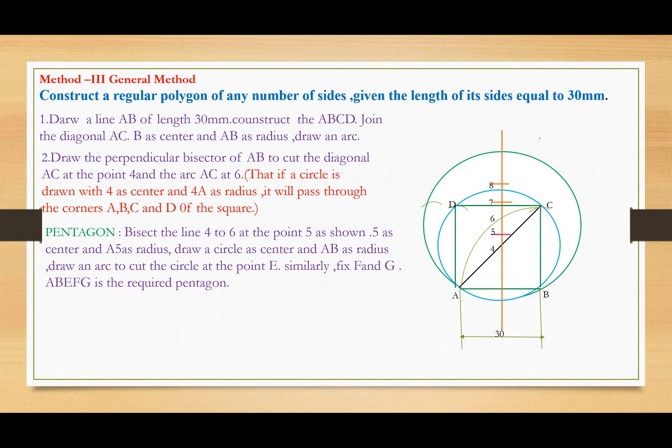Take AB distance and cut the circle into 5 equal parts: A, B, E, F, G. Join these points and we get pentagon ABEFG, which is the required pentagon.